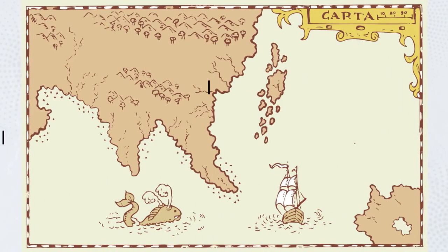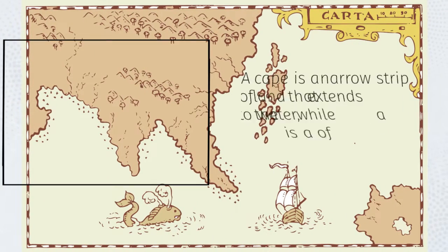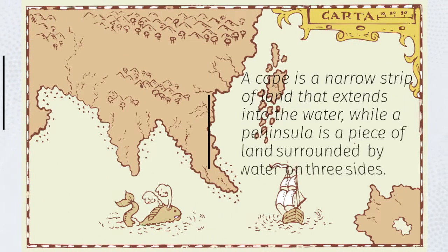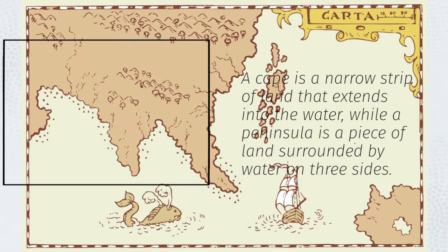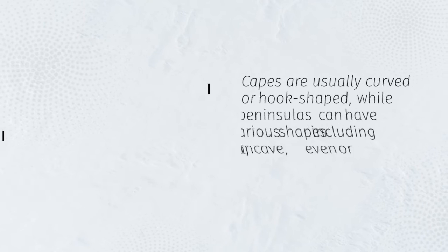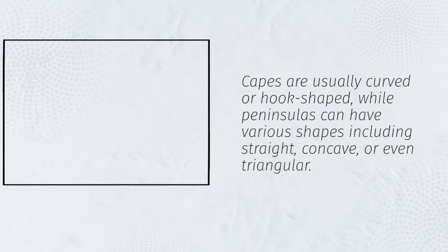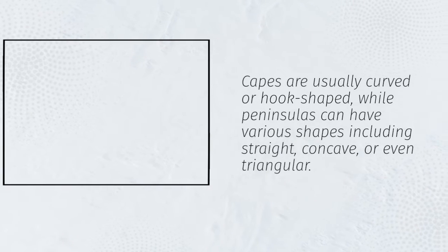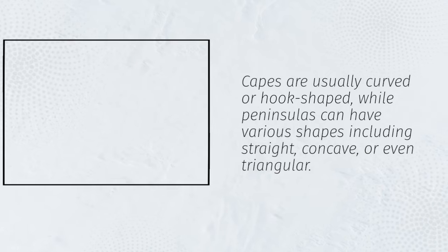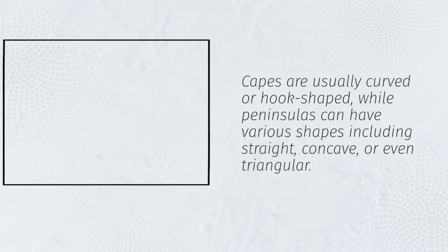A cape is a narrow strip of land that extends into the water, while a peninsula is a piece of land surrounded by water on three sides. Capes are usually curved or hook-shaped, while peninsulas can have various shapes including straight, concave, or even triangular.